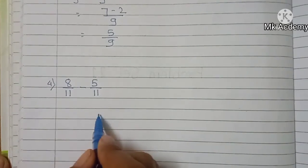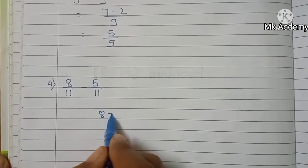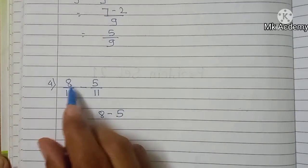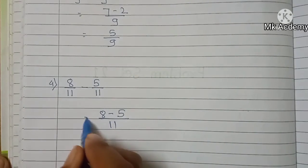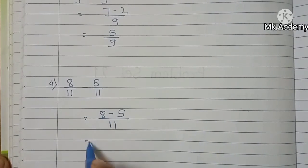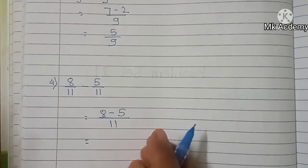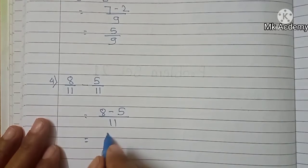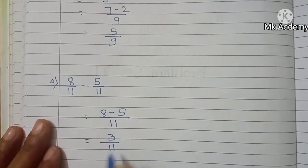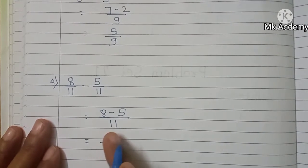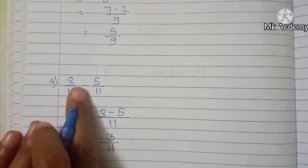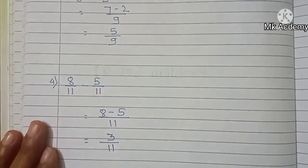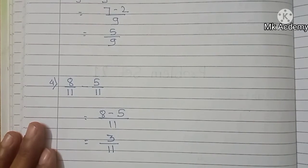We subtract the numerators and write down the denominator as it is. 8 minus 5 is 3, so 3 upon 11. Our answer is 3 upon 11. So 8 upon 11 minus 5 upon 11 is equal to 3 upon 11.